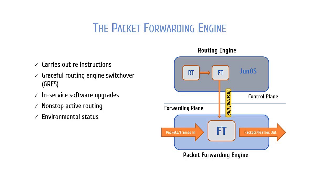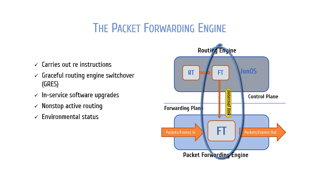The PFE is the core component of the forwarding plane. The PFE will methodically forward traffic based upon its own copy of the forwarding table, which is synchronized with the information in the routing engine's forwarding table. Having its own copy of the forwarding table allows the PFE to forward traffic more reliably and quickly, and eliminates the need to consult the routing engine for every packet that needs to be forwarded. Using a local copy of the forwarding table allows the PFE to continue normal forwarding even when the routing engine is experiencing heavy load or even instability.